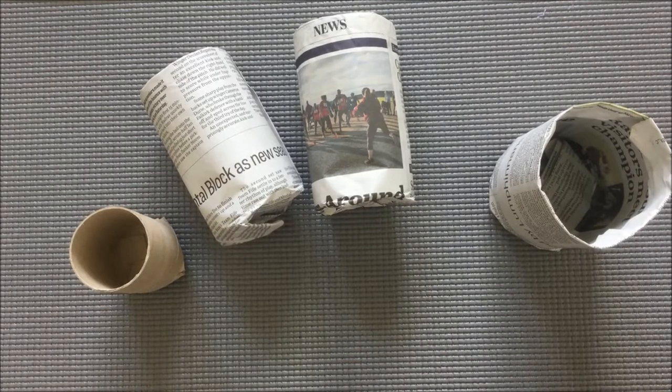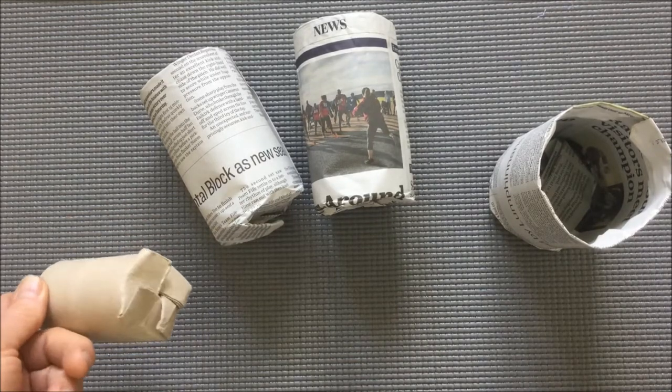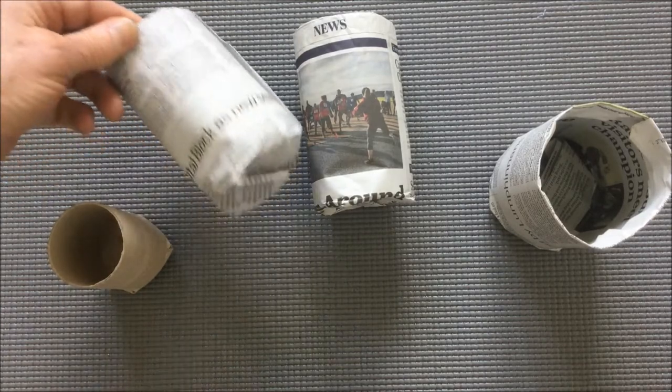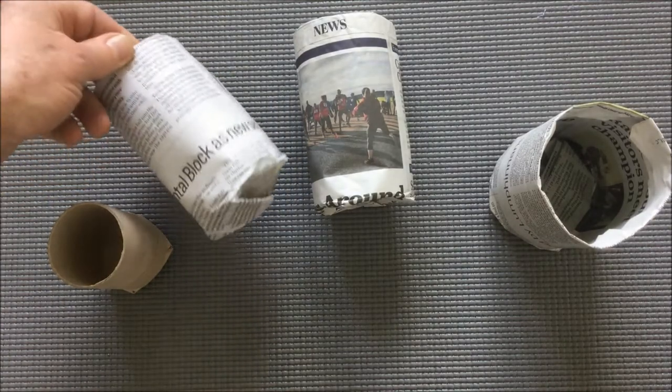In this video we're going to be making paper pots. They're really good for the environment because you're avoiding using plastic. When the plant is ready you just plant them straight into the ground without disturbing the roots of the plant.